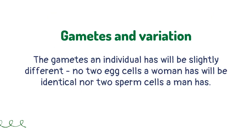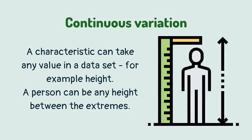The gametes an individual has will be slightly different — no two egg cells a woman has will be identical, nor two sperm cells a man has. A characteristic can take any value in a data set, for example height. A person can be any height between the extremes.